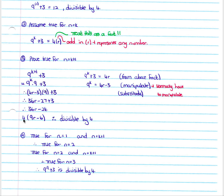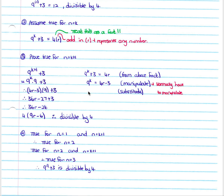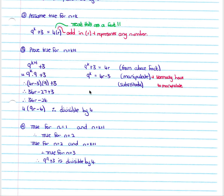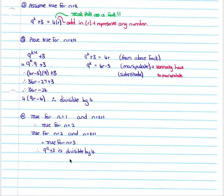When we prove it true for n equals k plus 1, we have 9 to the (k plus 1) plus 3, which we break down into 9 to the k times 9 plus 3. From the fact above, 9 to the k equals 4r minus 3. We substitute 4r minus 3 in for 9 to the k, multiply out, and get 36r minus 24. Taking out a common factor of 4 shows it is divisible by 4. In our fourth step we conclude: by mathematical induction, if it's true for n equals 1 and n equals k plus 1, it's true for all n, and therefore 9 to the n plus 3 is divisible by 4.